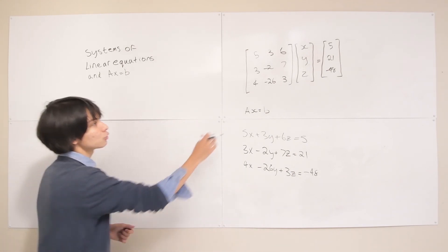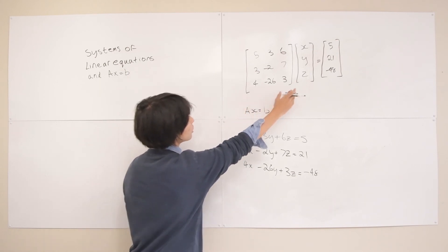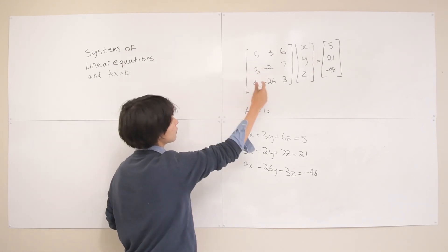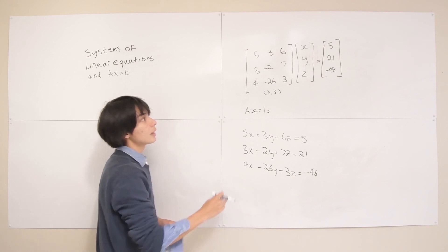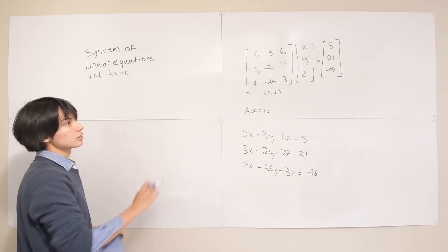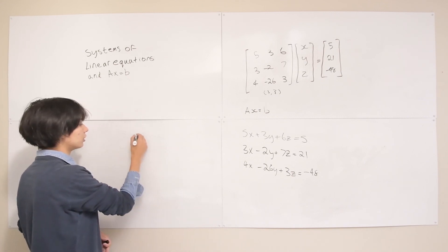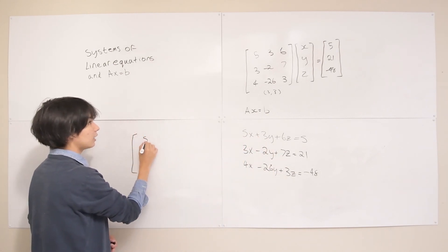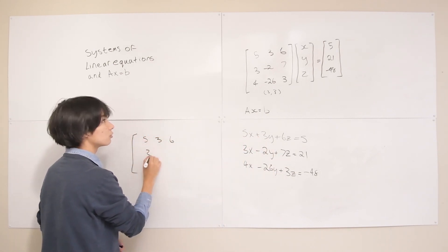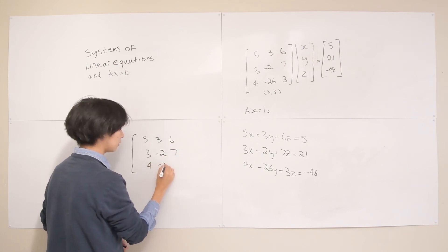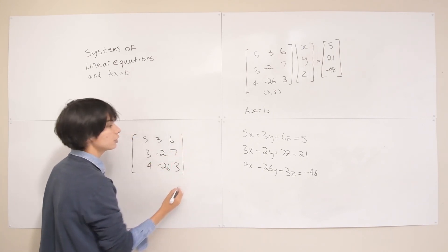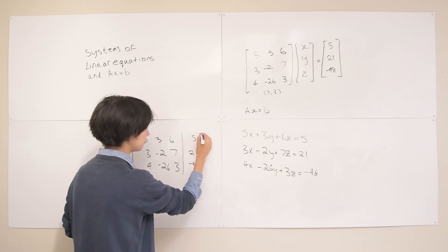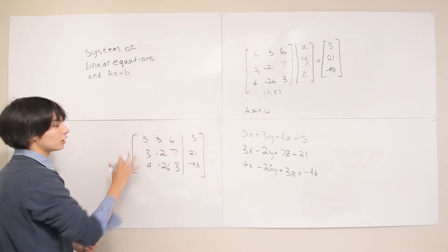One more thing is that we don't actually really need this variable vector here because when you have a three by three matrix we kind of assume that we have three variables. So if you want to be even more efficient you can pretty much just completely represent the system of equation by having this a vector and putting a partition here and then putting the 5, 21, and negative 48. That's just a very quick and dirty way to show the system of linear equations.